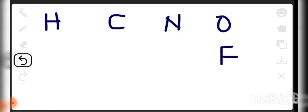If I ask you to draw the Lewis dot structure of these atoms, the first thing you are going to do is know their valence electrons — the electrons in their outermost shell. You can get this from their group number. Hydrogen is group one: one valence electron. Carbon is group four: four valence electrons. Nitrogen is group five: five valence electrons. Oxygen is group six: six valence electrons. Fluorine is group seven: seven valence electrons.